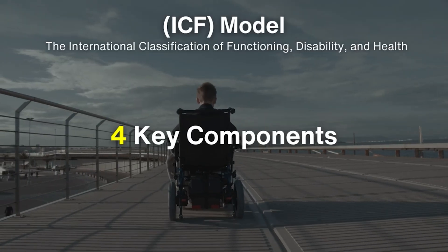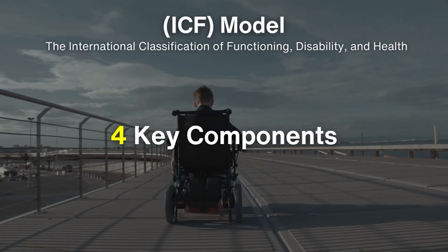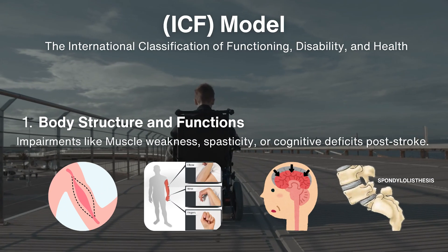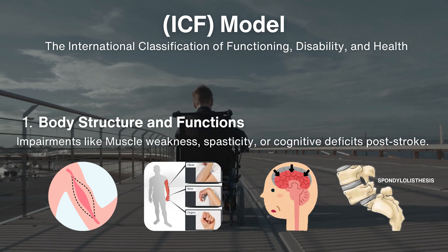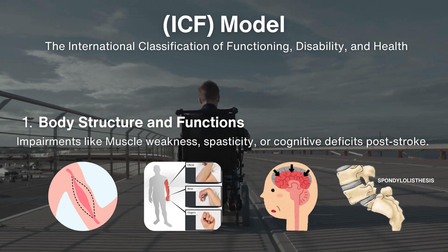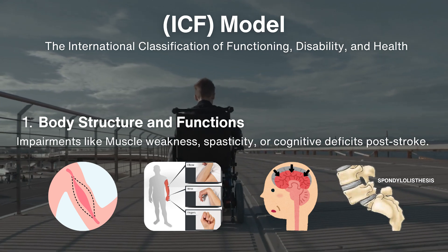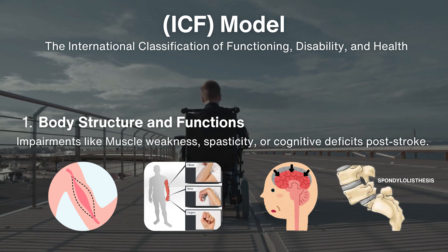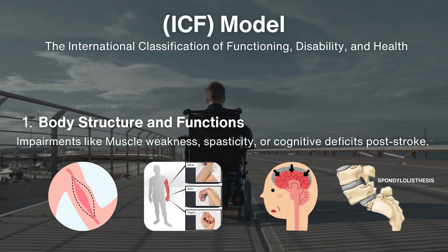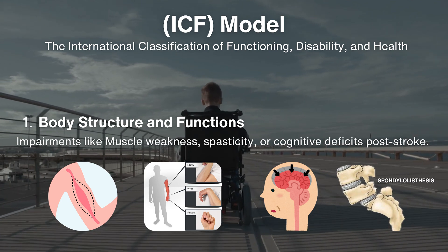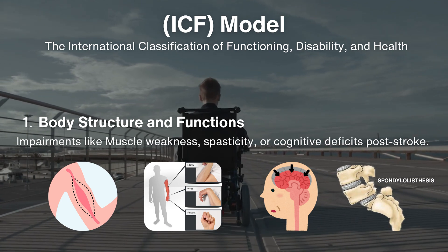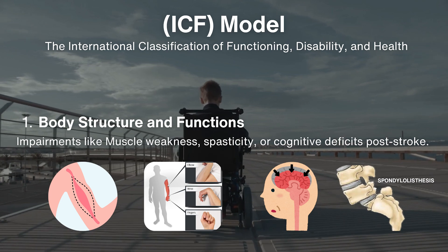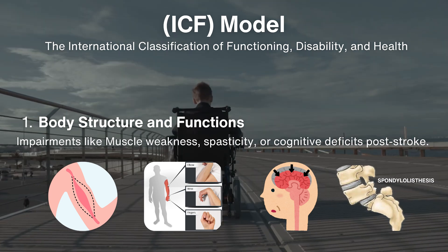The first step is to understand four key components. The first one is body structure and functions. Impairments like muscle weakness, spasticity, or cognitive deficits post-stroke are noted under this point. All structural impairments in the body, irrespective of the condition, can be included in this category.